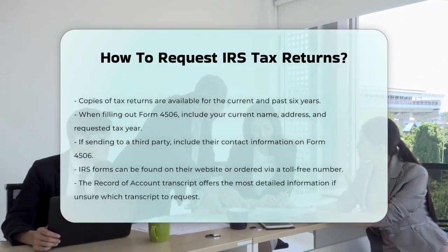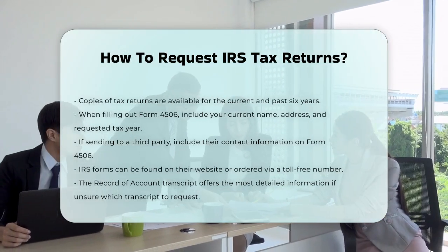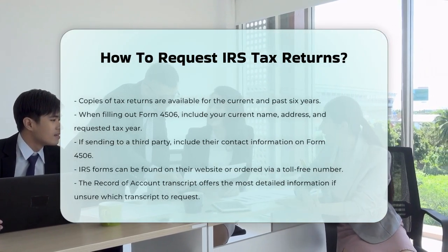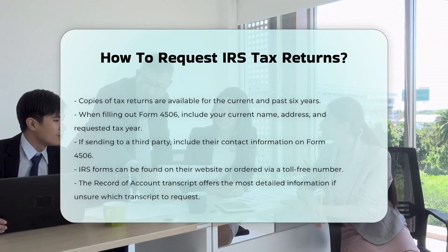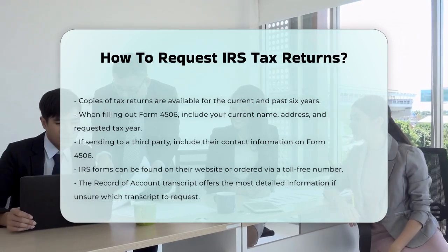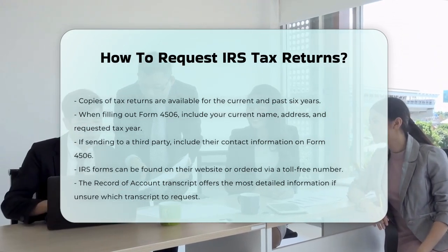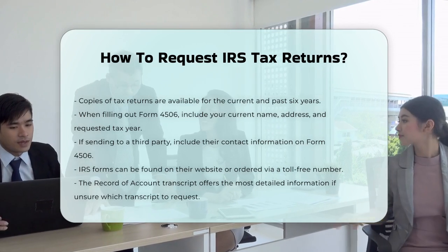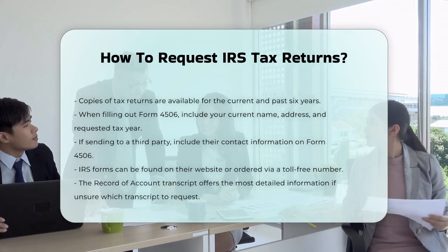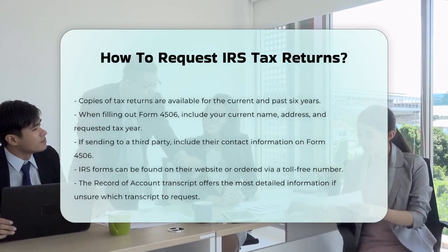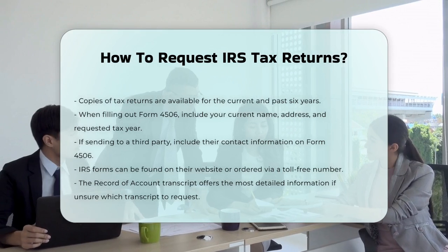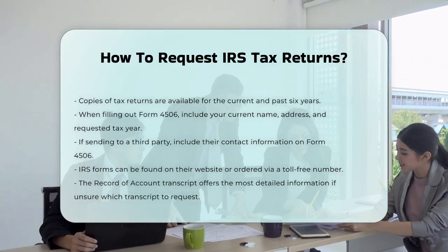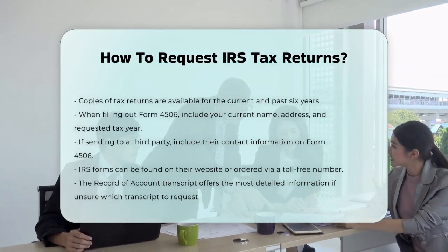Forms 4506 and 4506-T can be found on the IRS website under Forms and Publications, or ordered by calling the toll-free Forms and Publications order line at 1-800-TAX-FORM. Remember, if you're unsure which type of transcript you need, the Record of Account transcript provides the most detailed information.